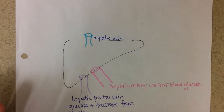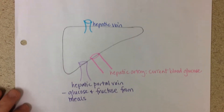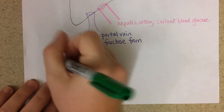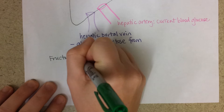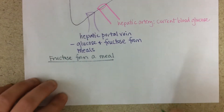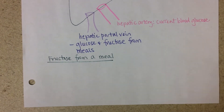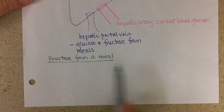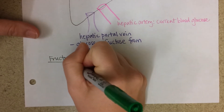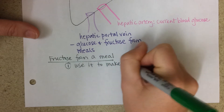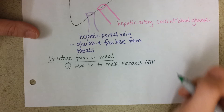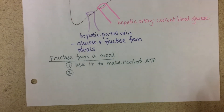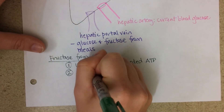Let's take a couple of scenarios. Say you just ate a lot of glucose and fructose. First, let's look at what happens to fructose from a meal — this could be natural fructose in fruit, or unfortunately high fructose corn syrup, the main sugar in sodas and candies. The first thing the liver will do is use it to make needed ATP — it wants to burn fructose right away if possible. Then, once it has used as much as it needs to make ATP, it will convert the rest to triglycerides.